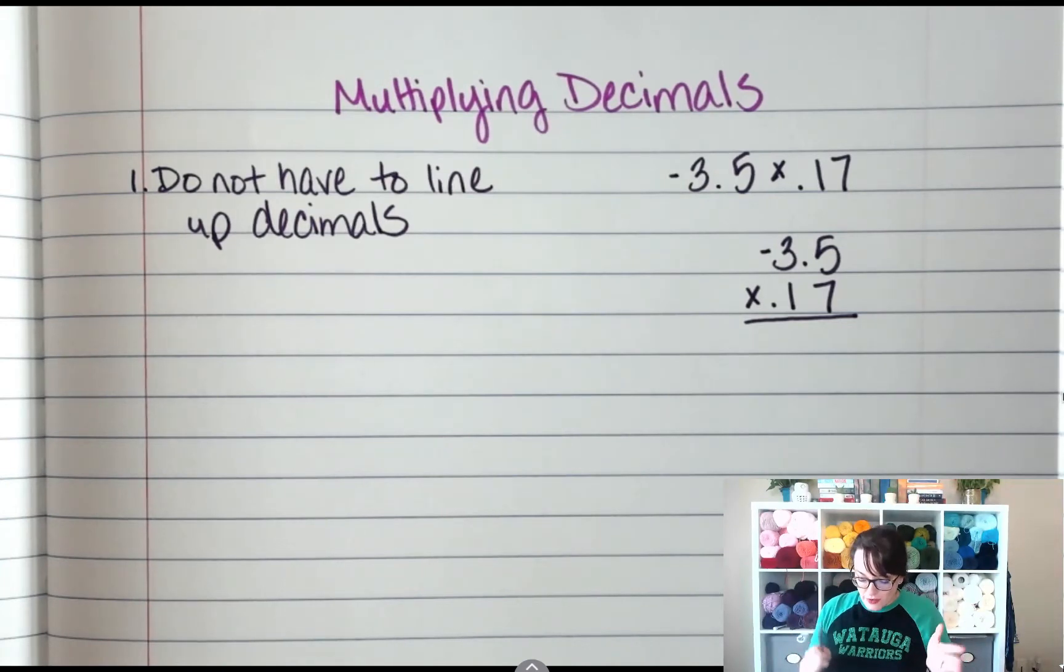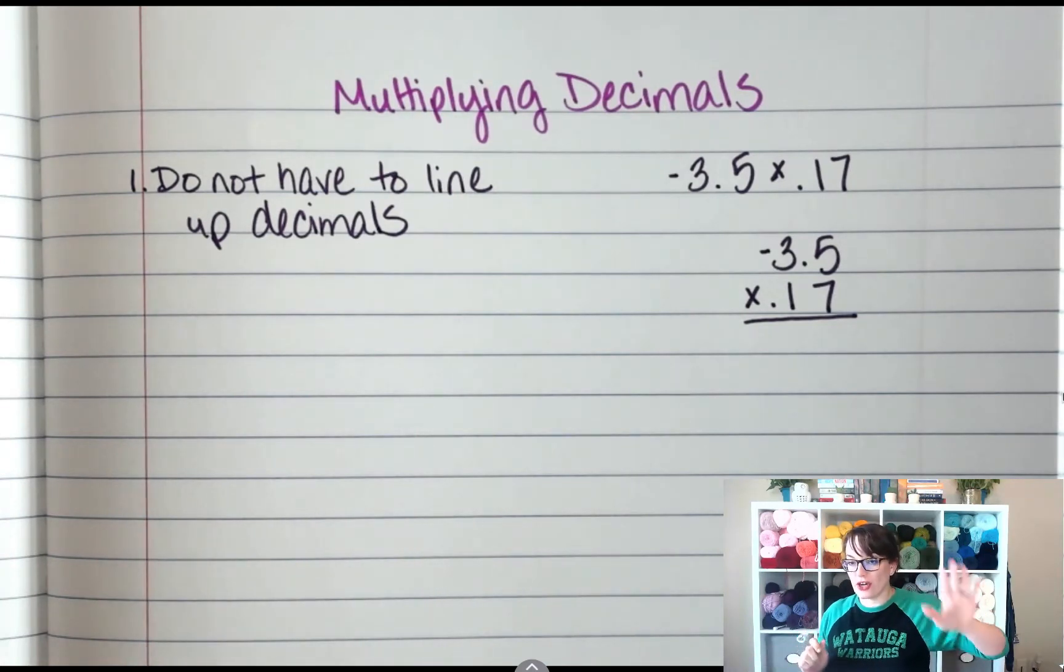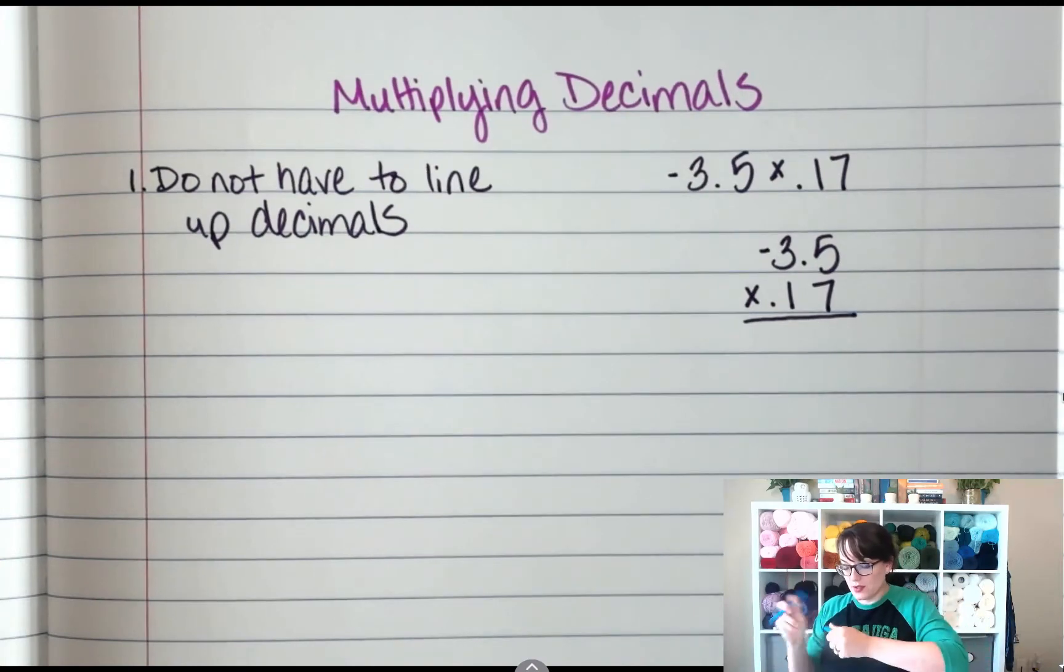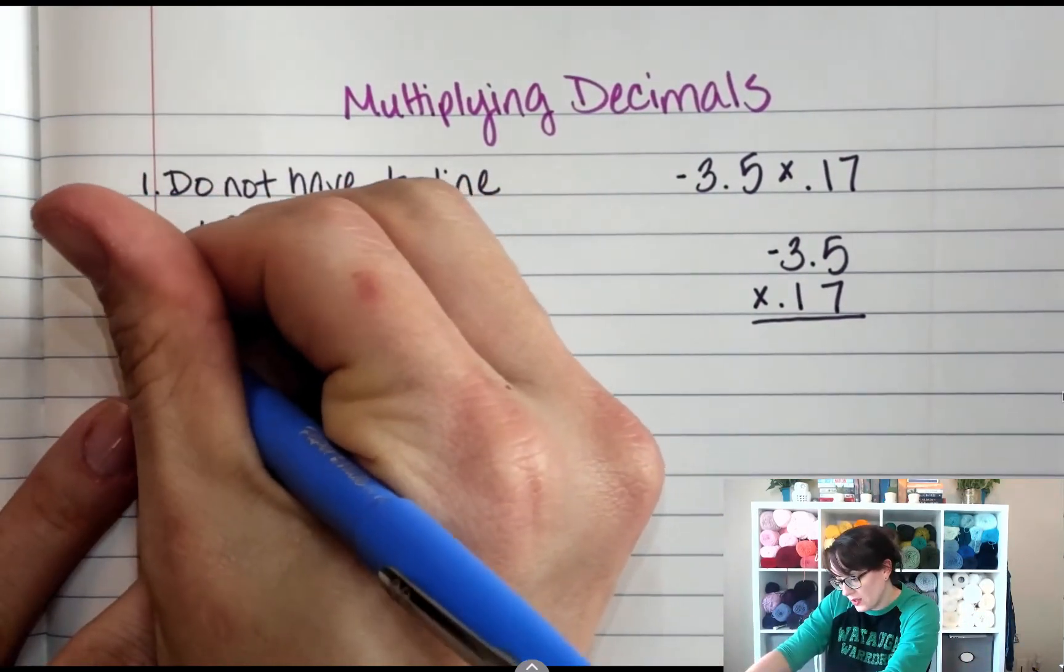Alright, so after I rewrite it, I'm going to multiply this like it says 35 times 17. So step two, I want to multiply it normal.